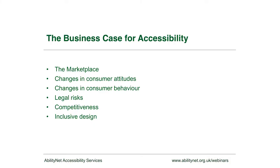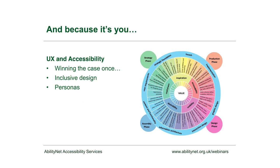I'm going to run through a few things to do with the business case. I'll talk about changes in the marketplace - if you have clients or you're running a business, you should be thinking about the way the marketplace is changing. That includes changes in consumer attitudes and consumer behaviour. There are legal risks to getting this wrong. Your competitors might be getting it right. And then I'll talk about inclusive design and the connection between UX and accessibility, and how you can win the case for both.